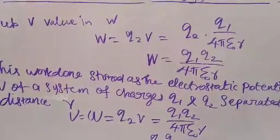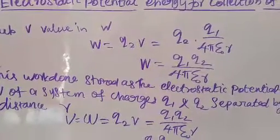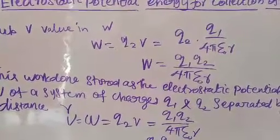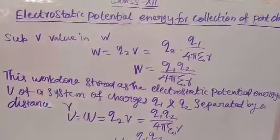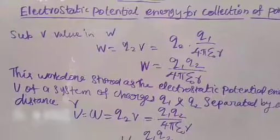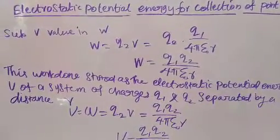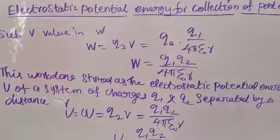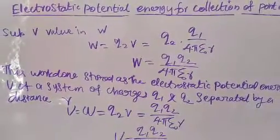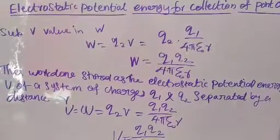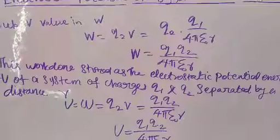So, substituting V equal to Q1 by 4 pi epsilon naught R, work done W is equal to Q1 Q2 by 4 pi epsilon naught R. This work done is stored as the electrostatic potential energy U of the system of charges Q1 and Q2 placed at distance R. So U represents electrostatic potential energy equal to work done equal to Q2 V equal to Q1 Q2 by 4 pi epsilon naught R.